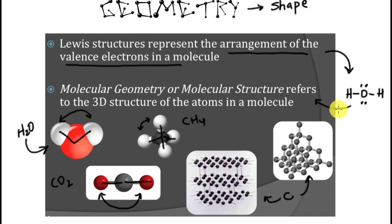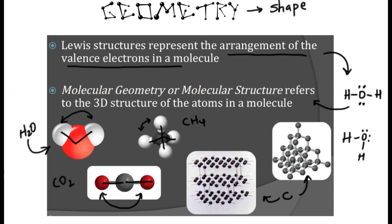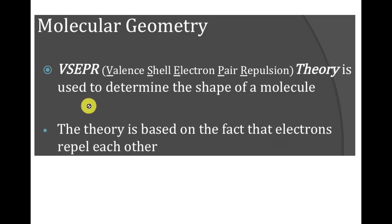Lewis structures can mislead you if you're not careful. To determine the molecular geometry, you have to know something about what's called the valence shell electron pair repulsion theory, referred to as VSEPR. It's basically the fact that electrons repel each other.